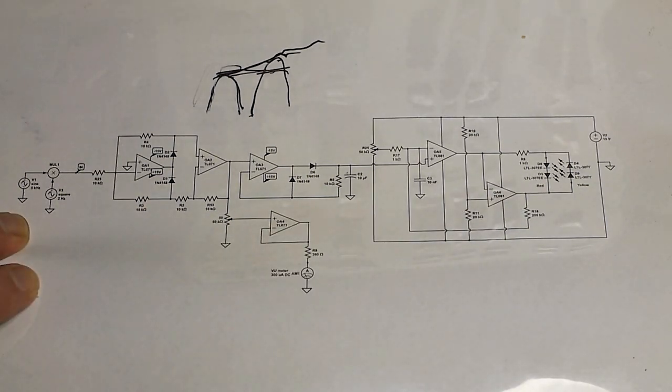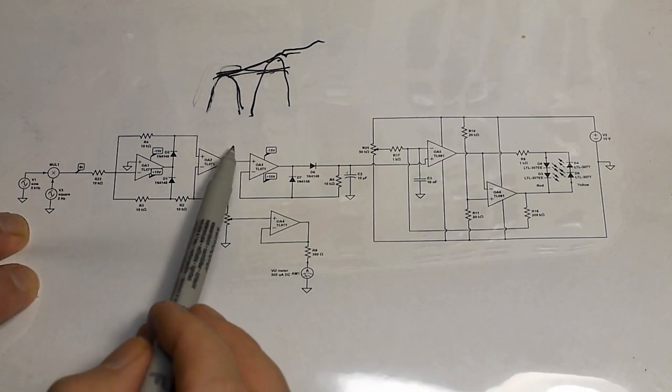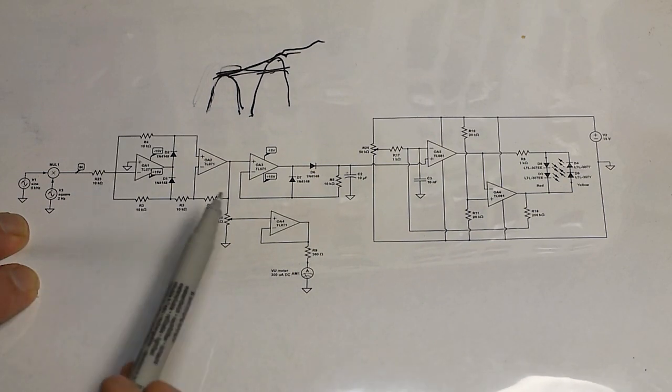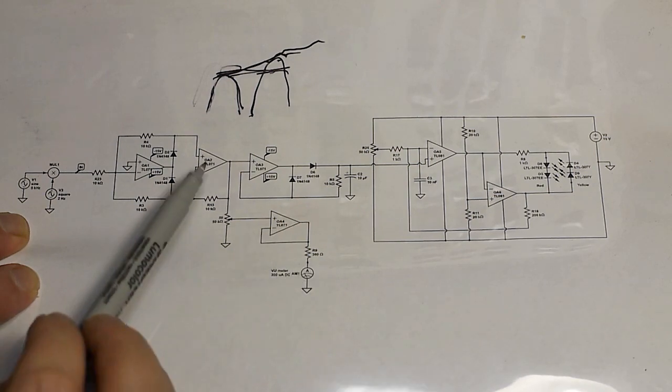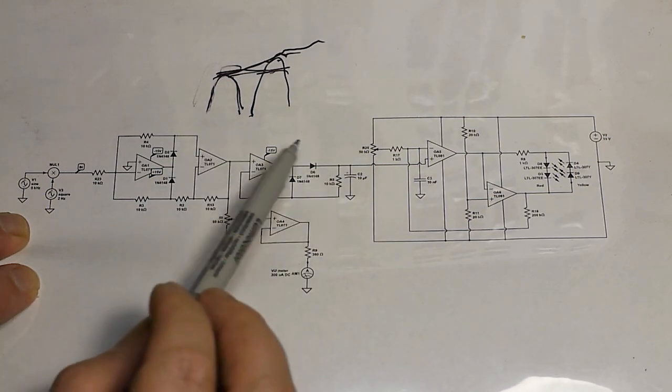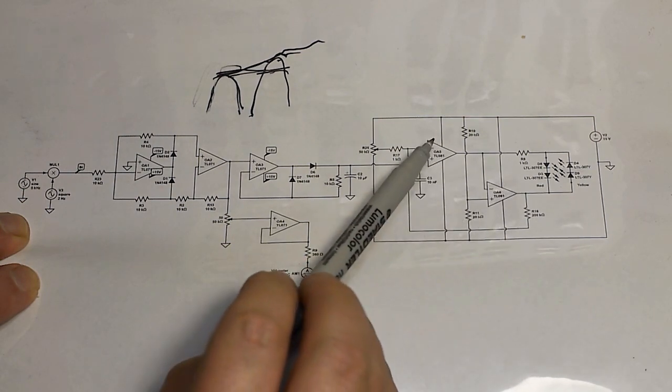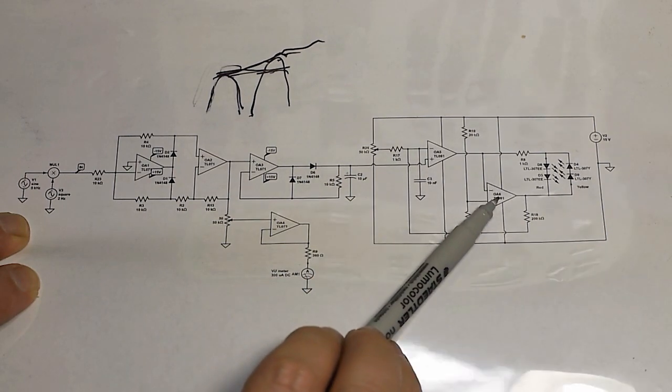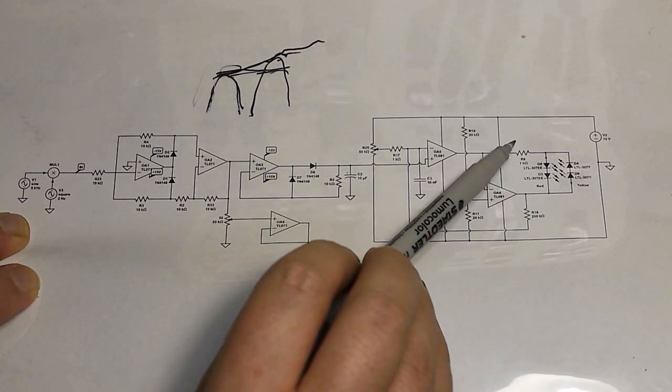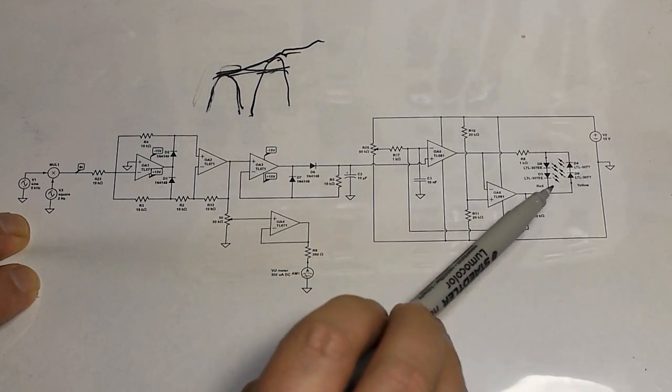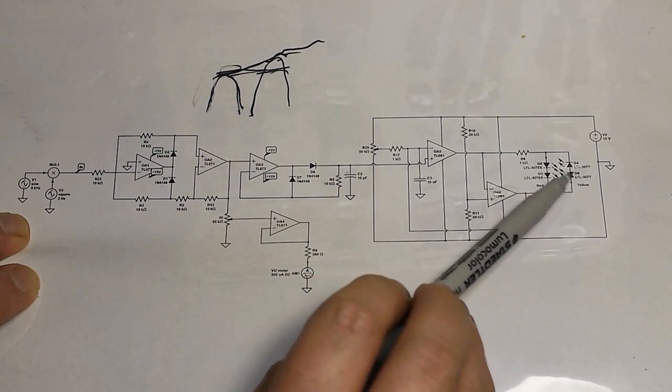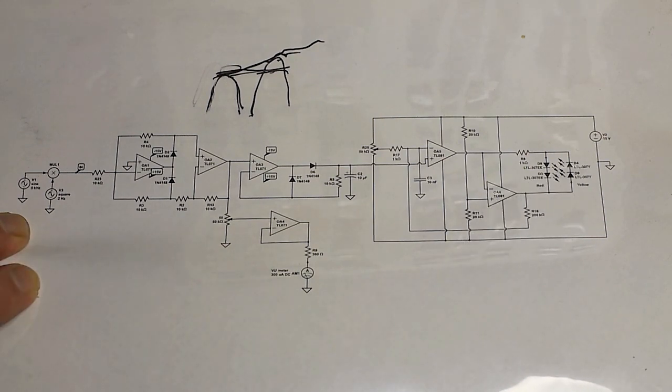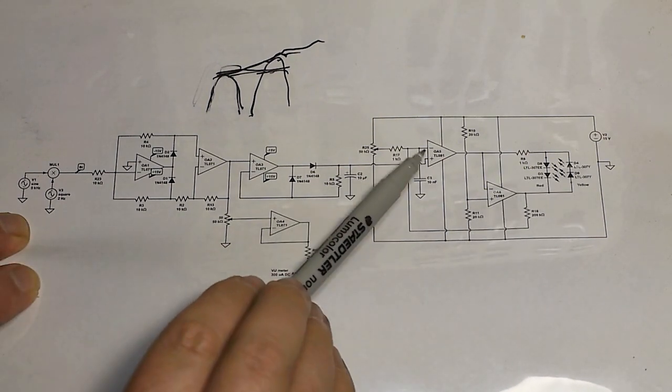So that's basically it. So we come in here, full wave precision rectifier, which comes through a buffer to drive our meter movement. And then a peak detector, and then we have a comparator, and basically another comparator used as an inverter. And those two outputs bring on either one pair of LEDs or the other.